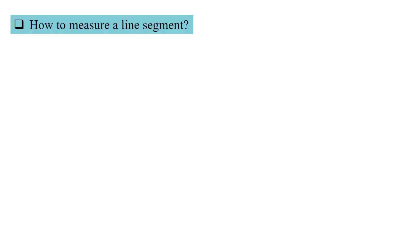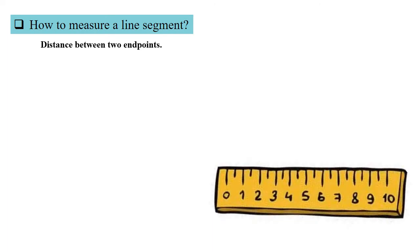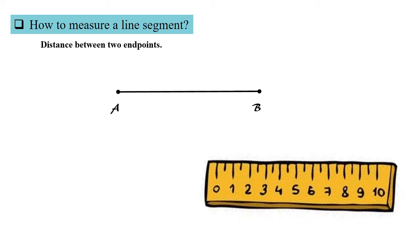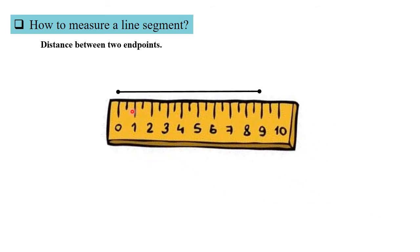To measure a line segment, we measure the distance between the two end points using a ruler. Consider this example with line segment AB. We drag our scale and count the number of lines. Therefore, the measure of line segment AB equals 9 cm.